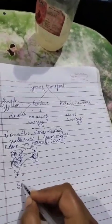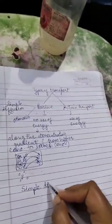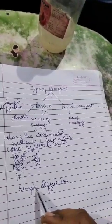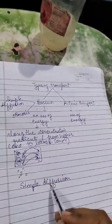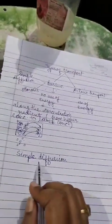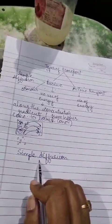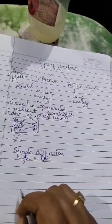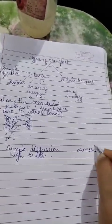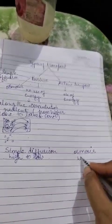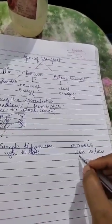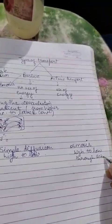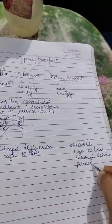Now first is simple diffusion. It is the movement of substances from the region of higher concentration to lower concentration, through a semi-permeable membrane.